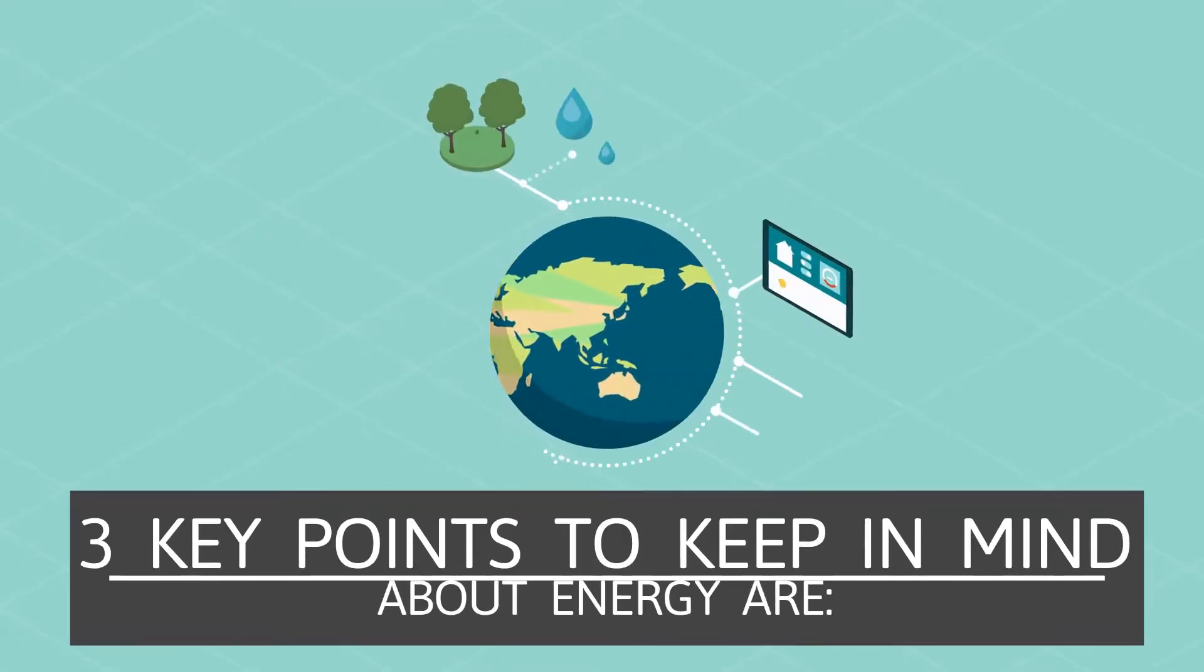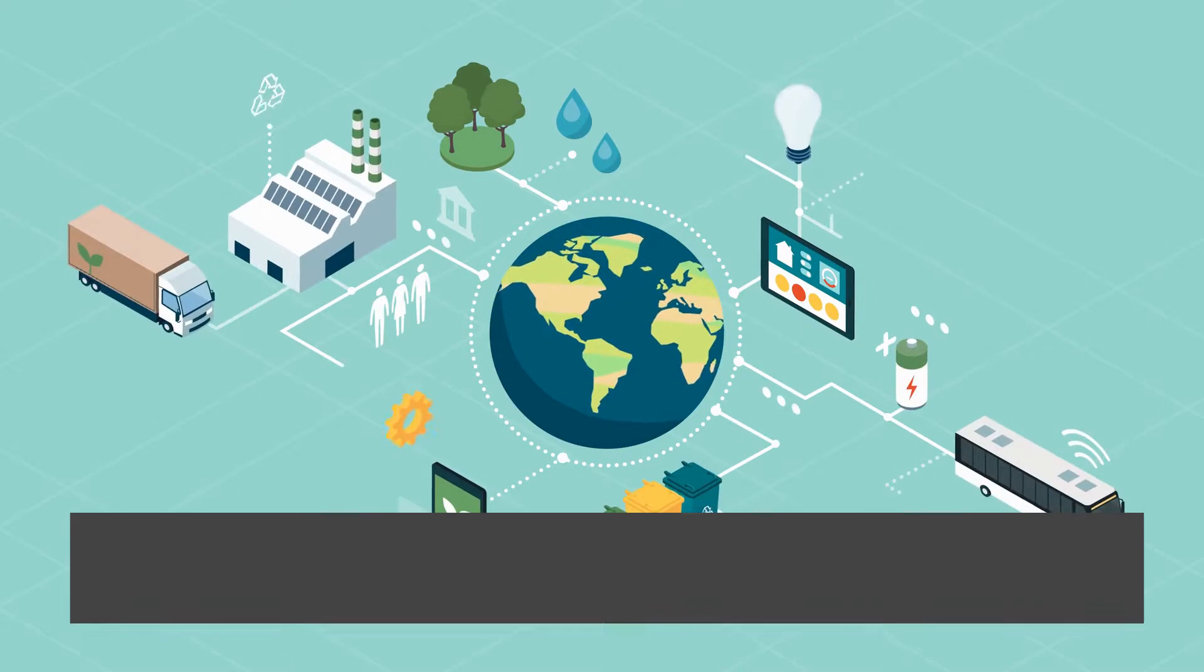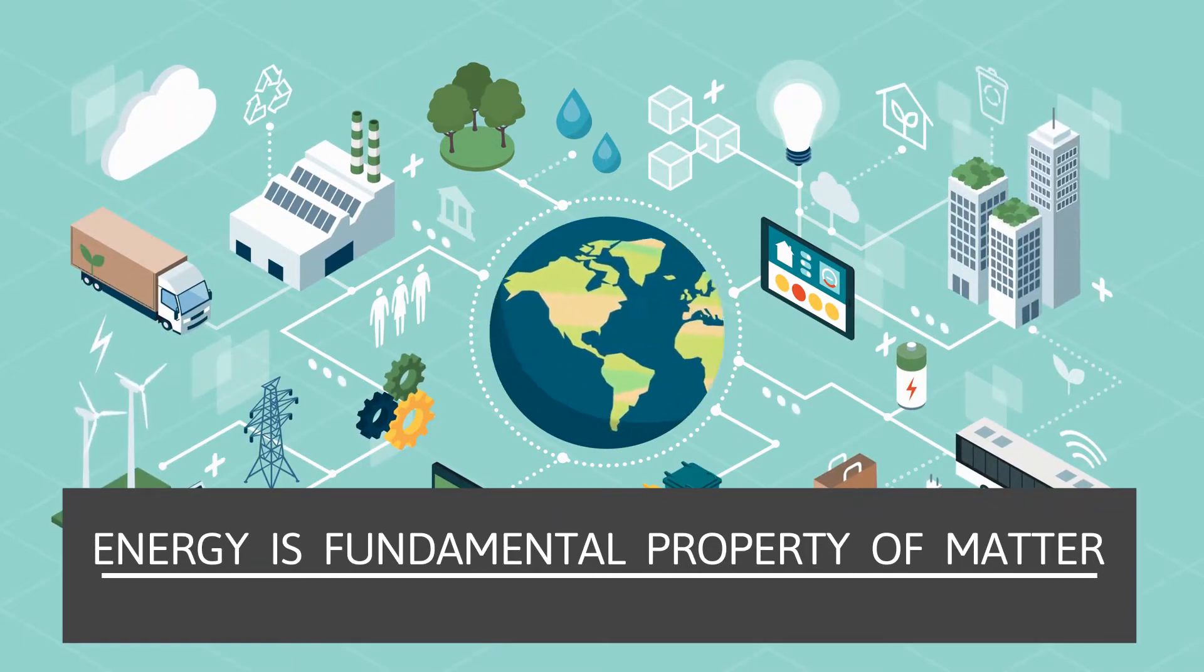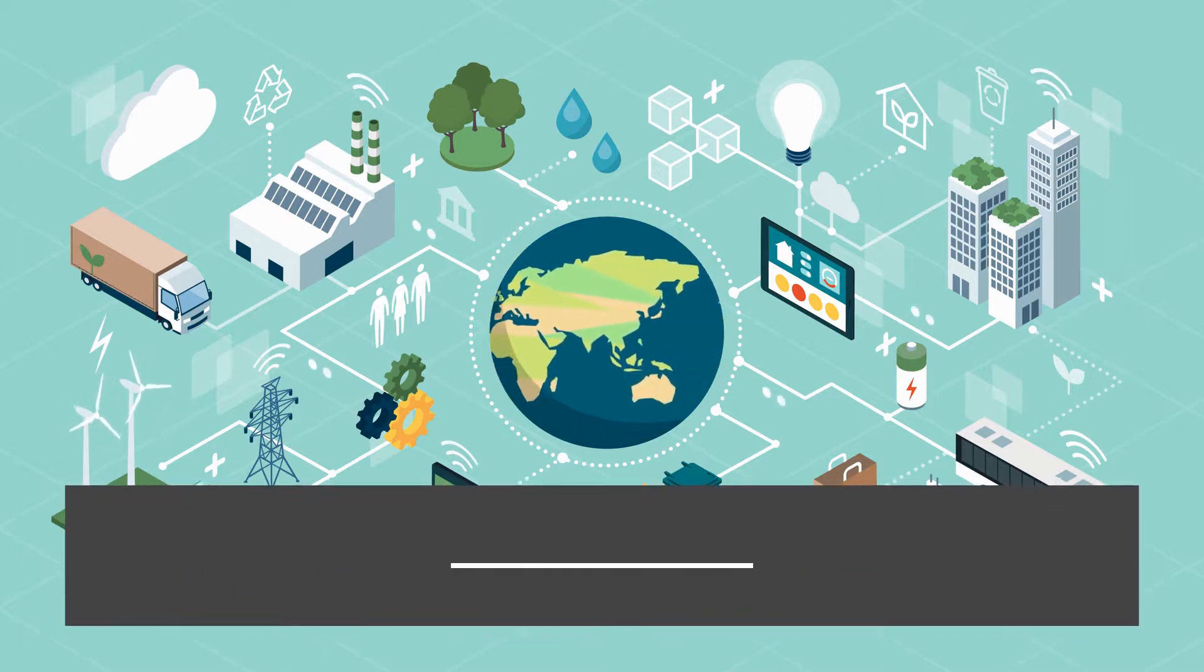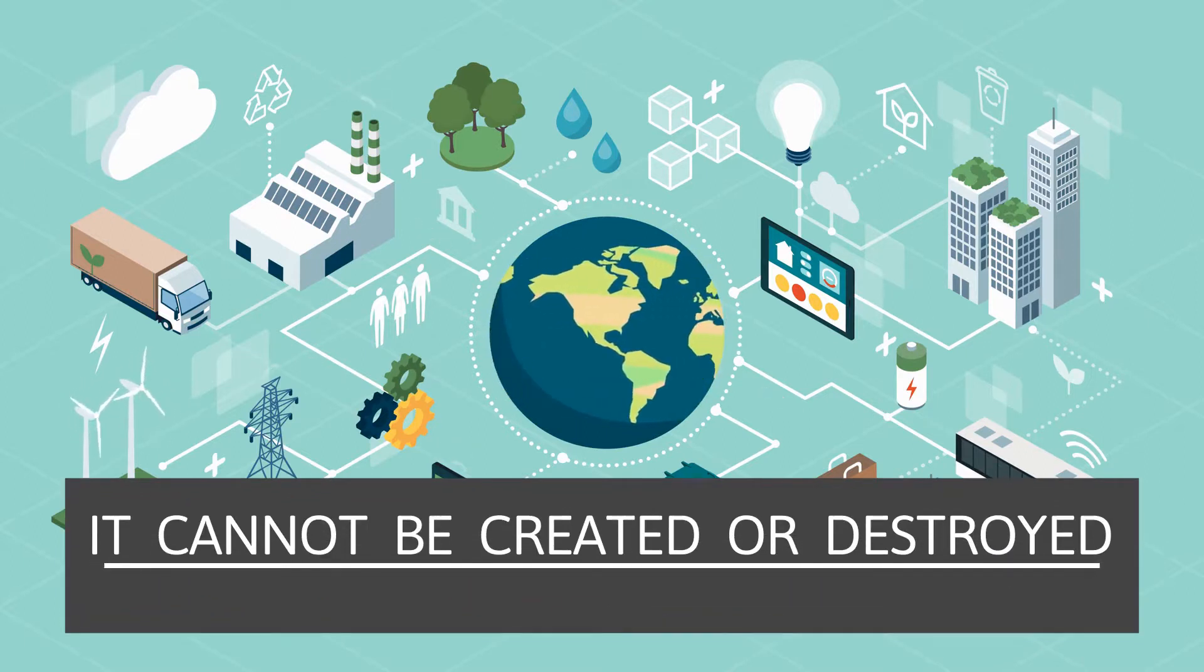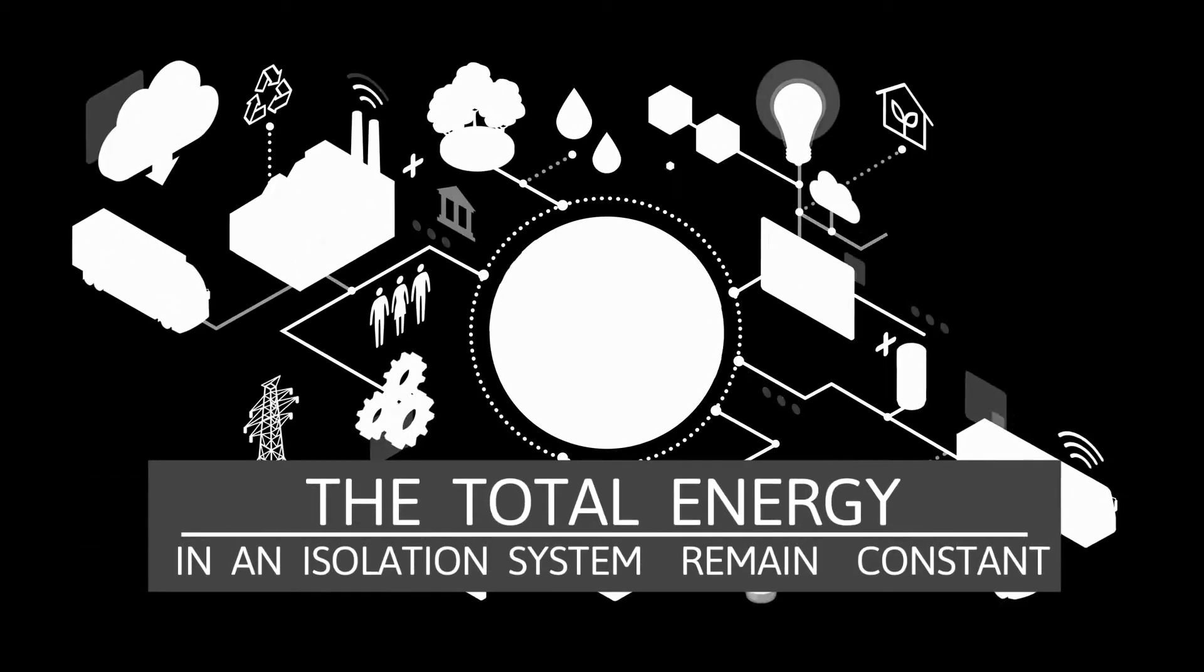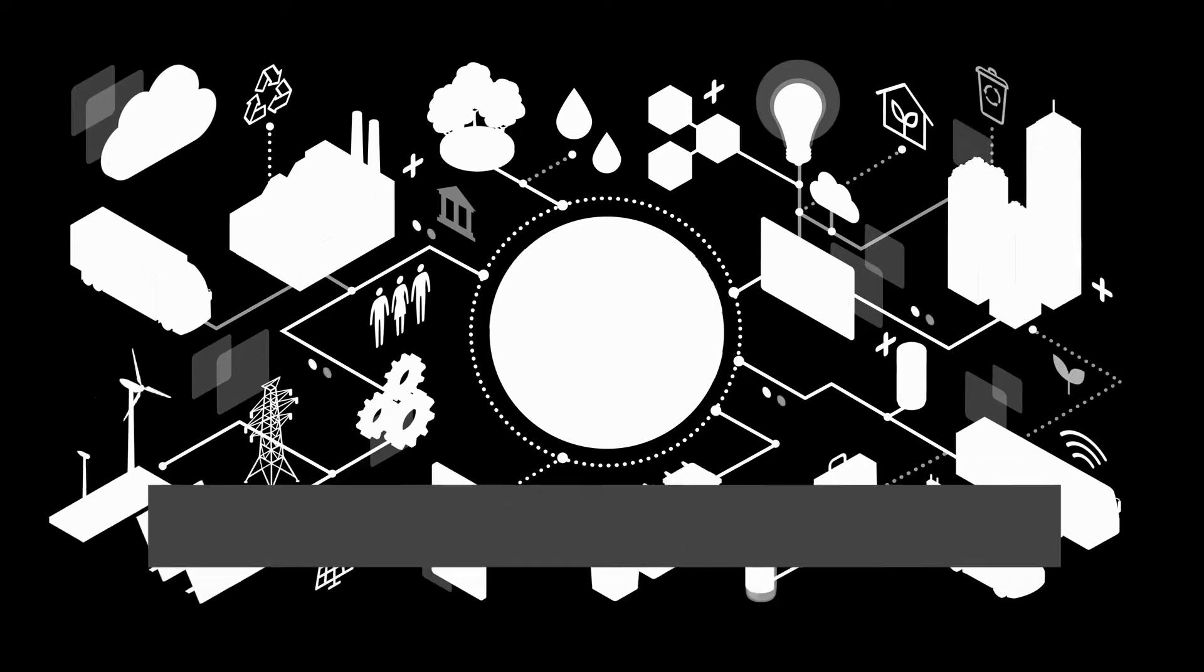Three key points to keep in mind about energy are: Number one, energy is a fundamental property of matter that can be transferred from one object to another. Number two, it cannot be created or destroyed, but it can change forms. Number three, the total energy in an isolated system remains constant. It's just changed from one form to another.